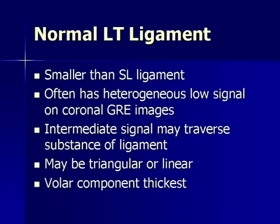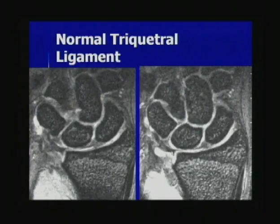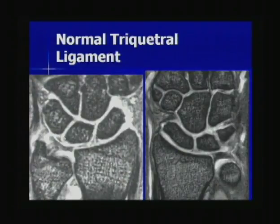The normal lunotriquetral ligament is much smaller than the scapholunate ligament. It often has heterogeneous low signal intensity on coronal gradient echo images, and you can normally see some intermediate signal traversing its substance. It's either triangular or linear in shape, and as opposed to the scapholunate ligament, the volar component is the thickest. Here are examples of a normal lunotriquetral ligament — fairly triangular in shape, attaching to high intensity cartilage on either side, which should not be confused for a tear.